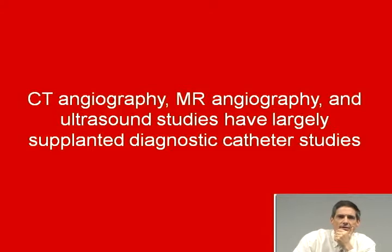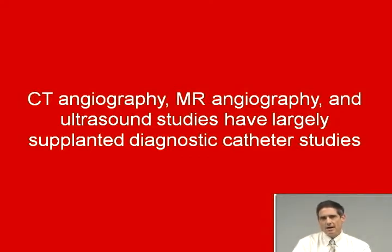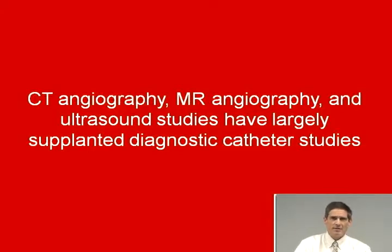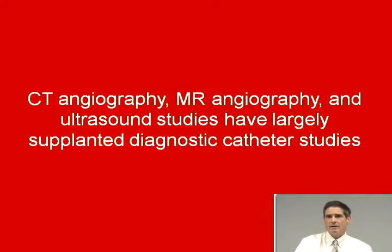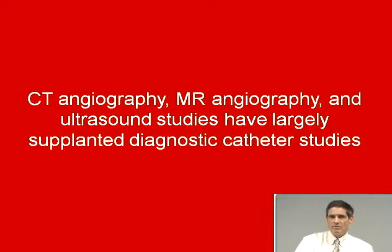The reference standard — the gold standard for vascular studies for a long time — has been catheter angiography. But diagnostic catheter angiography has been largely replaced, at least for screening purposes and initial diagnosis, by other methods. Vascular ultrasound is now widely used for screening and follow-up exams, often supplemented or replaced by computed tomographic angiography (CTA) or magnetic resonance angiography (MRA) when more definitive evaluation is required or when ultrasound can't be used. CT has higher spatial resolution and is less subject to motion artifact than MR. MR using flow technique can be performed without any contrast, which is helpful in patients with contrast allergy or renal insufficiency, though contrast-enhanced MR often provides better images.